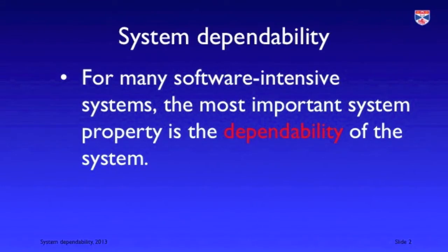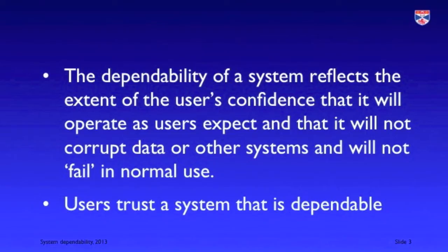I'm Ian Somerville and in this video I'm going to be talking about an important system attribute: the system's dependability. For many software intensive systems, the most important attribute is the system's dependability. Informally, the dependability of a system is the extent of the user's confidence that the system will behave as expected and will not damage the user's data or cause other adverse effects. You can think of it as the extent to which a user trusts a system, so dependability relates to the trustworthiness of the system.